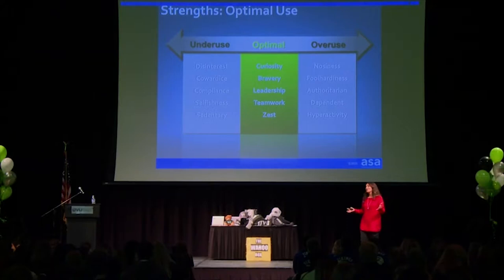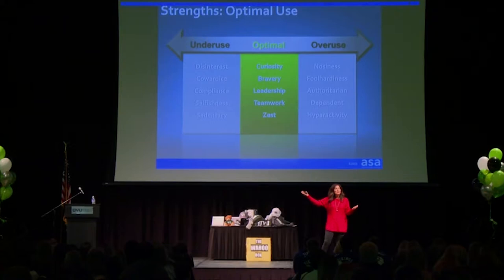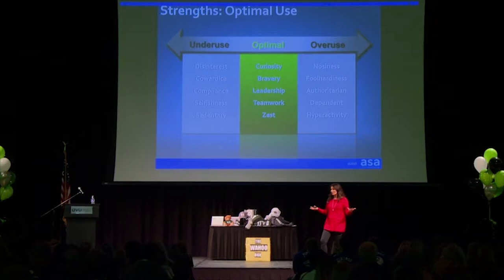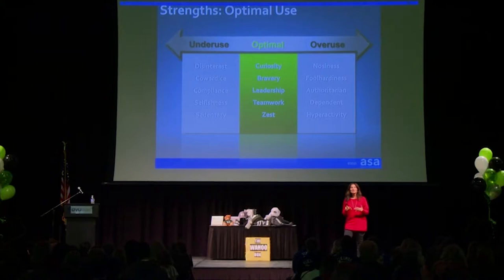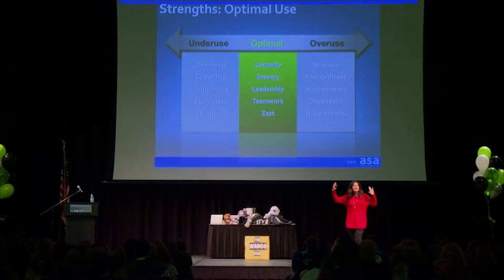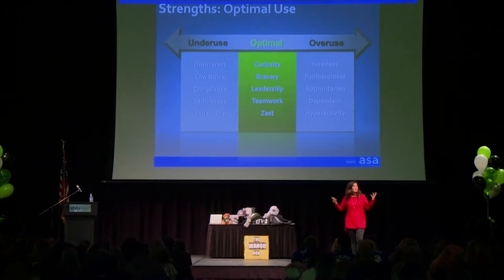Did you know that strengths have a shadow side? Research shows that overusing or underusing a strength can create what we call the shadow side of strengths. If you look on the screen, everything in green is a strength being optimally used. And if you look to the right or left of that, the gray boxes represent either overuse or underuse and how it might come across.